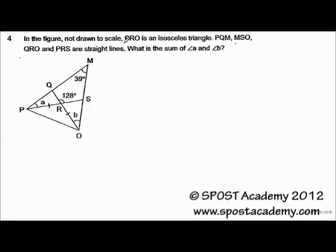The sentence tells us that PRO is an isosceles triangle. Looking at the diagram, we can see that this blue angle here is equivalent to 128 degrees. If you were to mark this out, the red angles added together is equal to 180 degrees minus 128 degrees, which gives us 52 degrees.